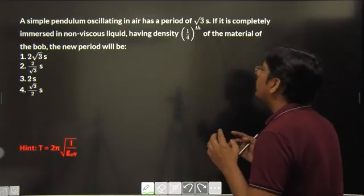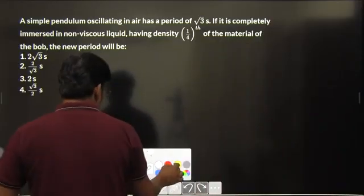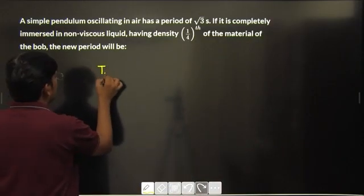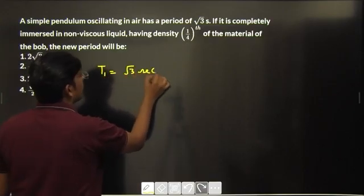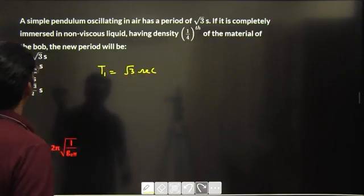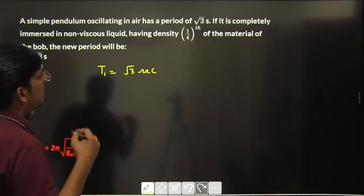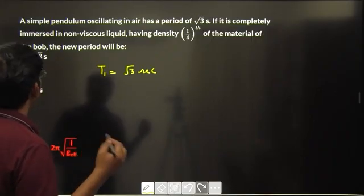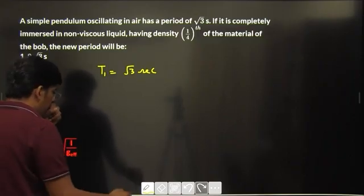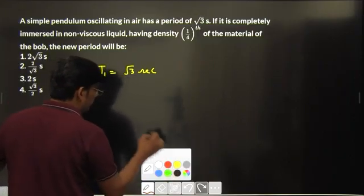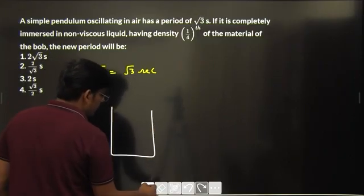A simple pendulum oscillating in air has a time period of root three seconds. It is completely immersed in a non-viscous liquid having density one-fourth of the density of the material of the bob. We need to find the new time period. When the bob is immersed in a liquid, the weight of the bob acts downwards and the buoyant force (upthrust) acts upwards.